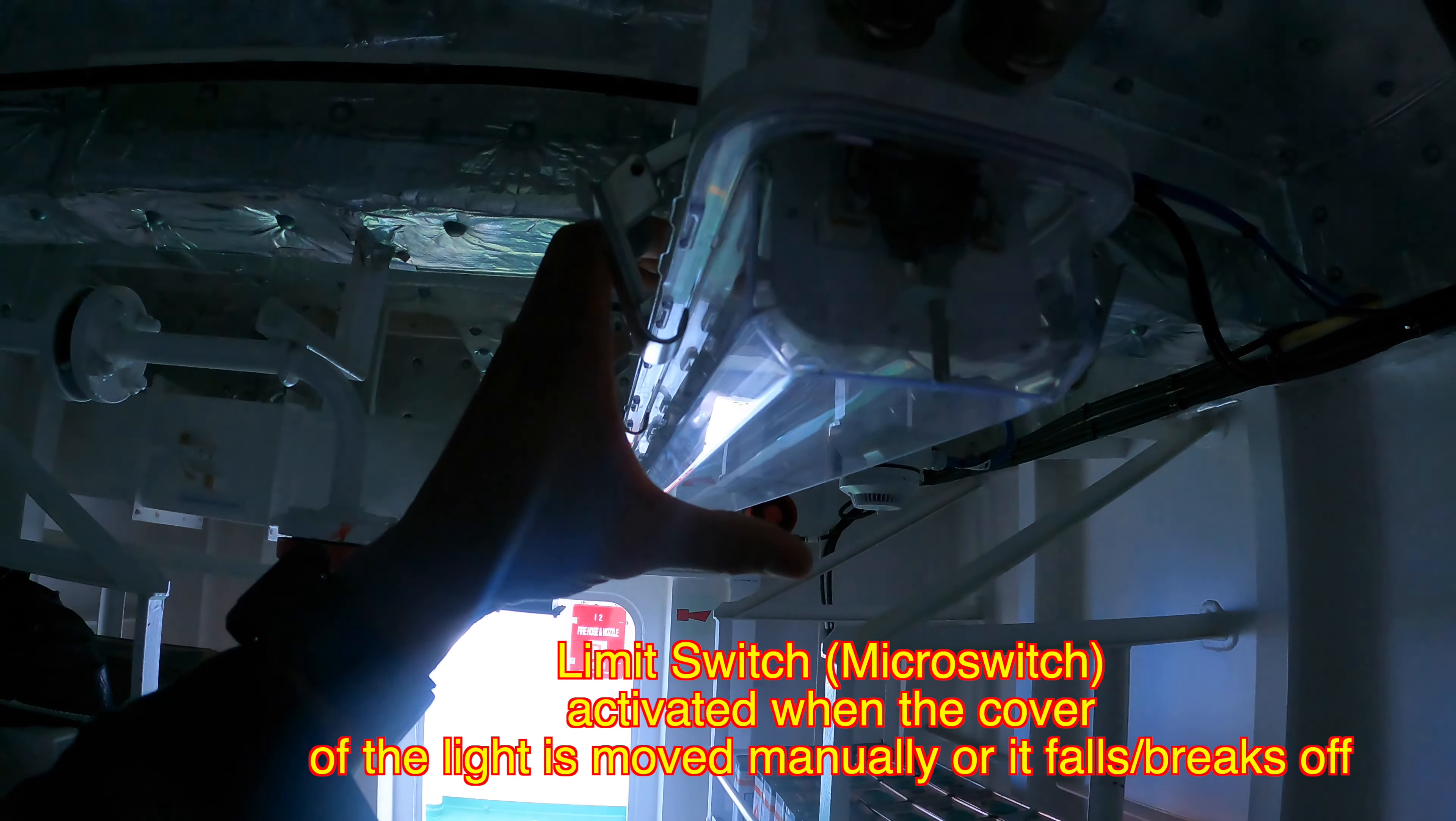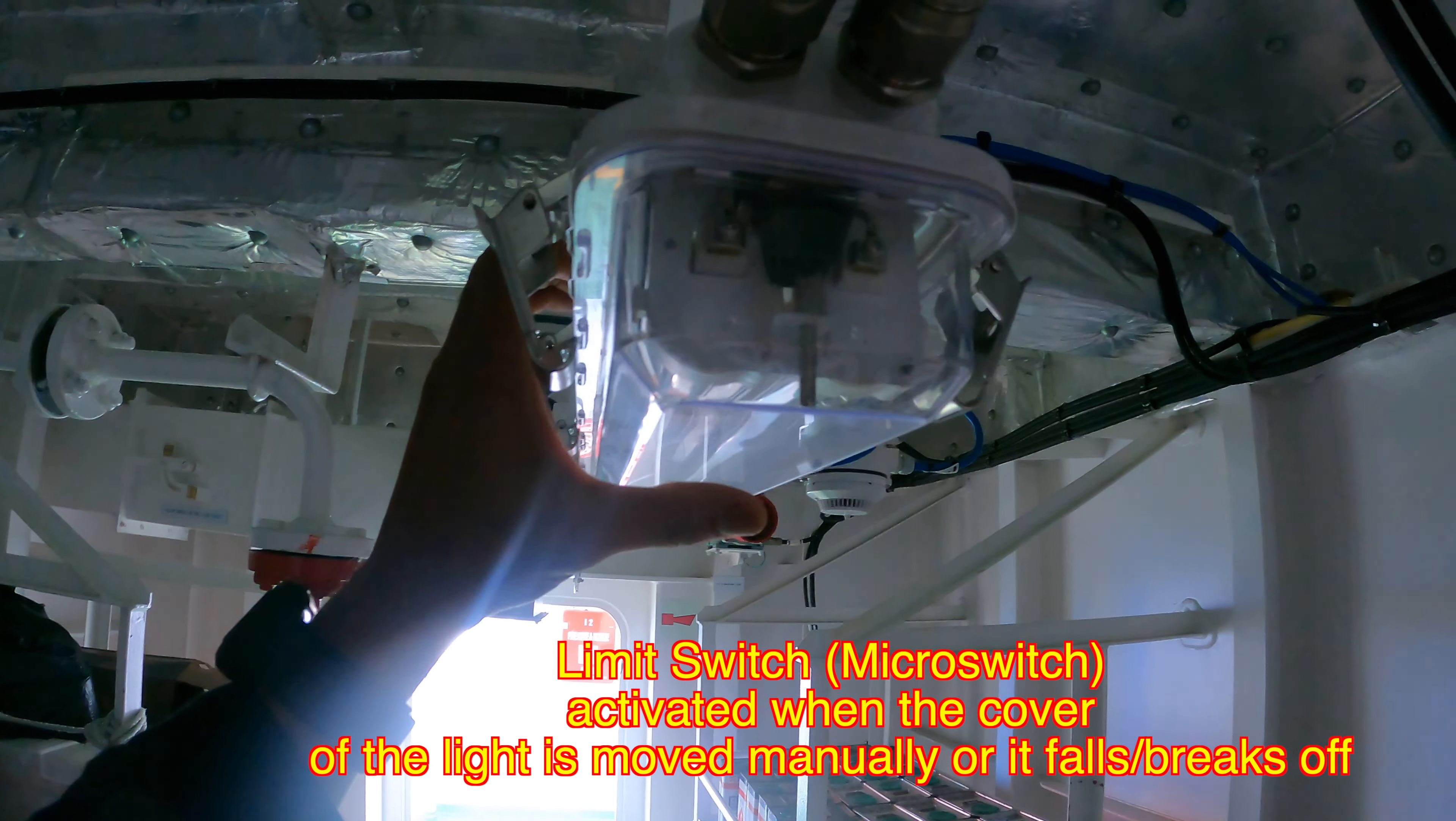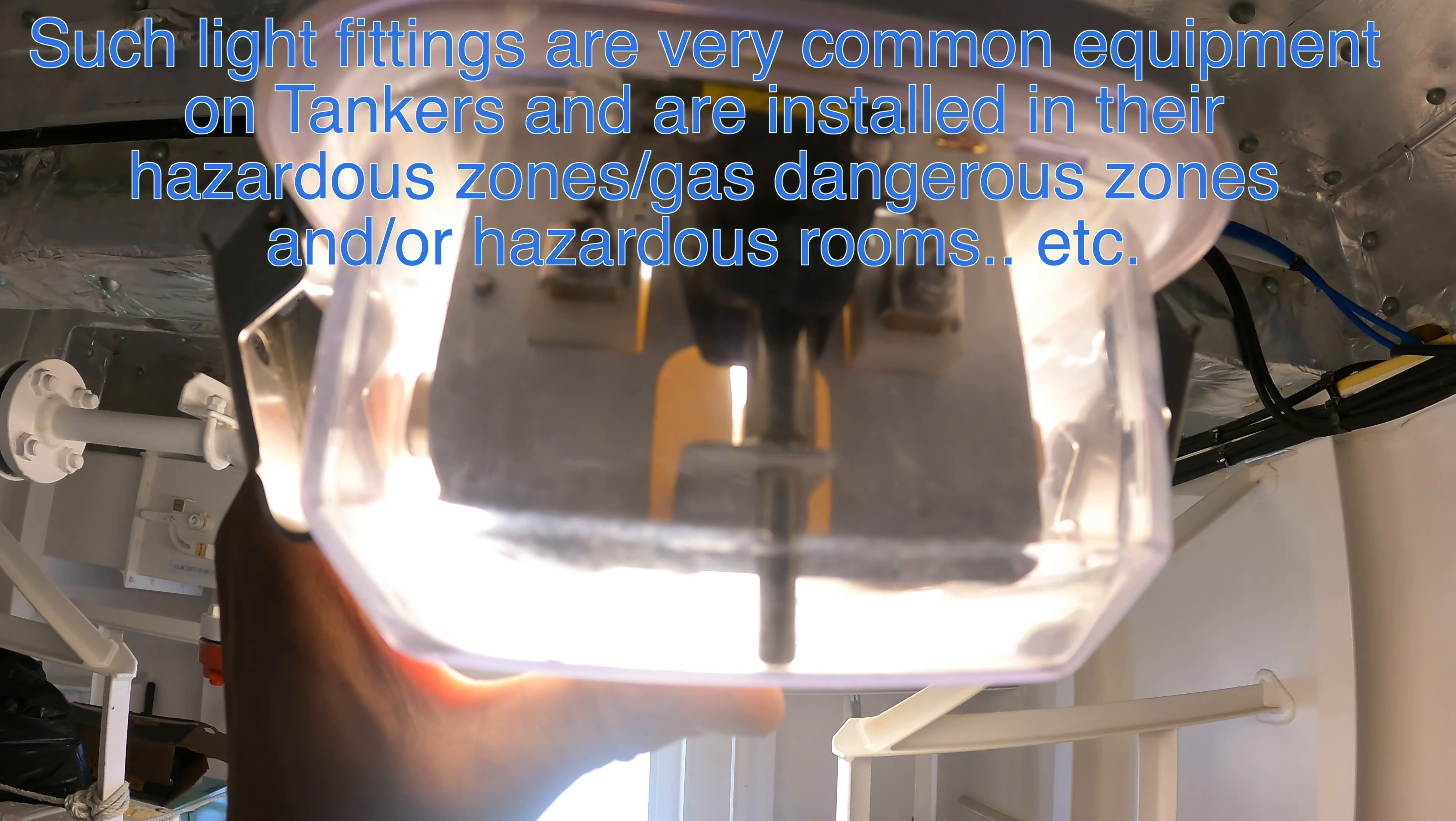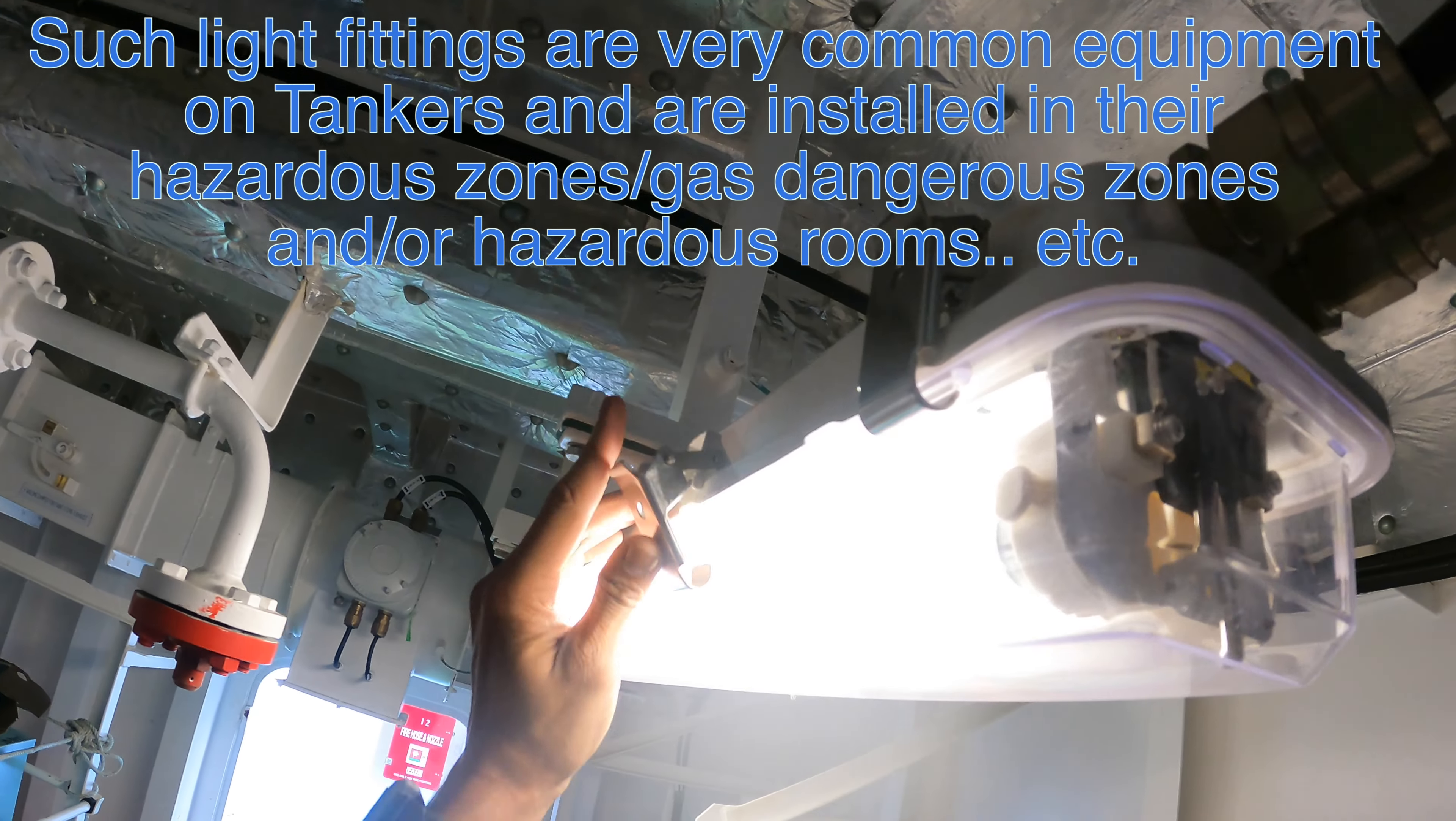So when the casing breaks off or falls down, or you manually remove this without switching off the light, that will automatically break the circuit of the light and switch off that particular tube light.